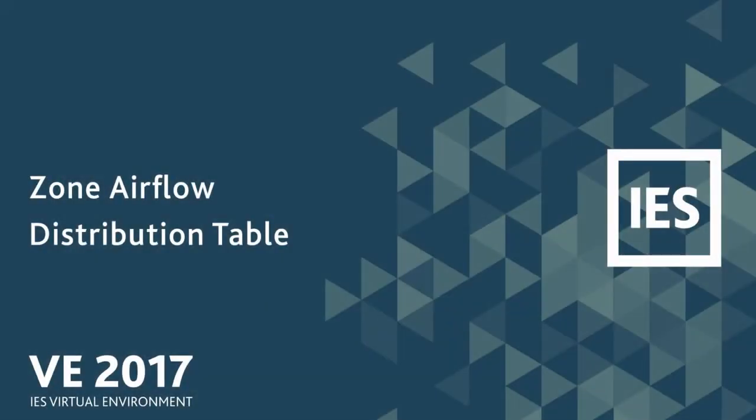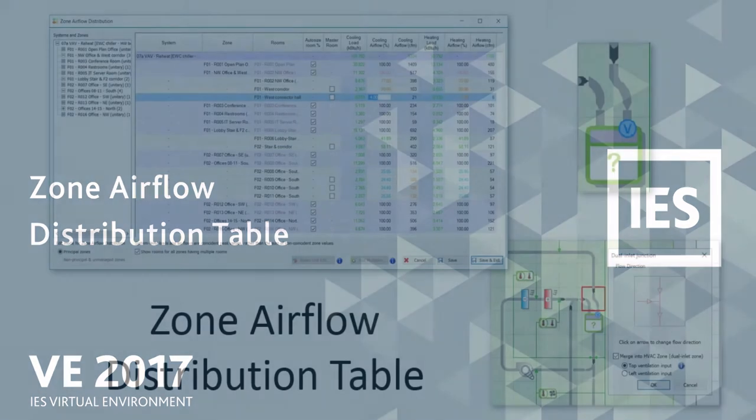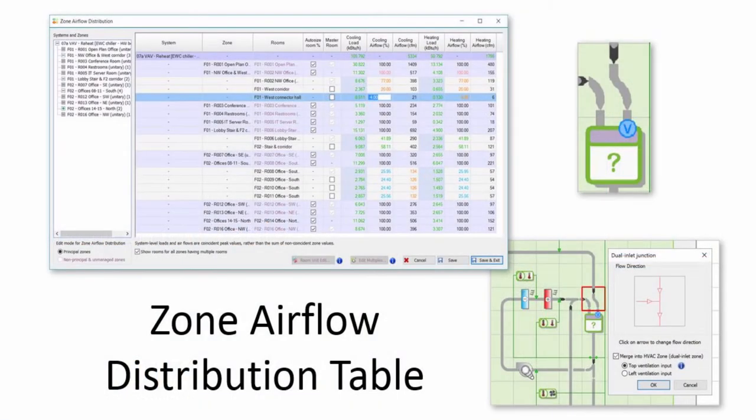In actual buildings, test and balance professionals adjust the distribution of airflow to rooms within an HVAC zone. In Apache HVAC, this balancing is accomplished with the zone airflow distribution table.